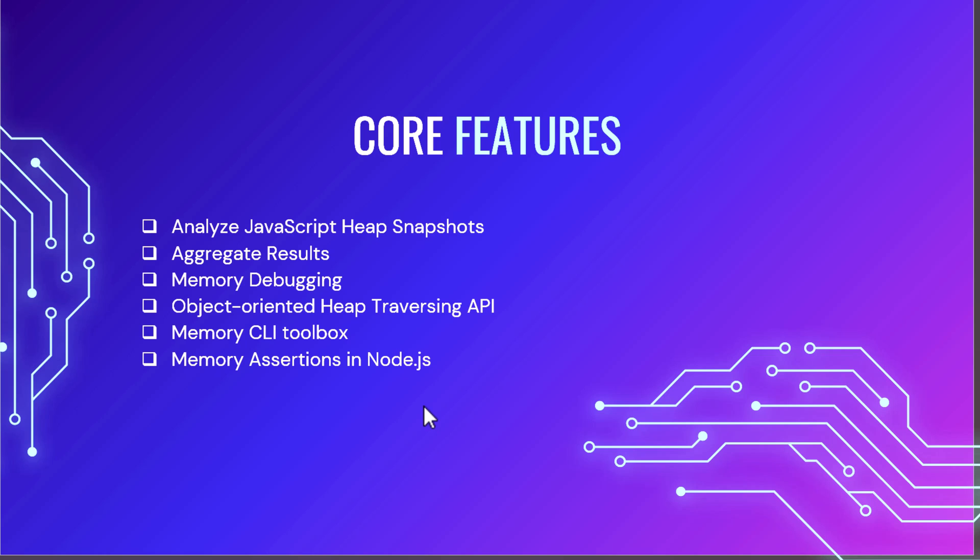If you have something like a single page application and you want to find some memory leaks, you can use the browser developer tools. But it is kind of a manual task and it needs some expertise. At scale, you cannot follow the same practice. But using Memlab, you can analyze your JavaScript heap snapshots pretty easily, and then you can integrate with your CI/CD pipeline.